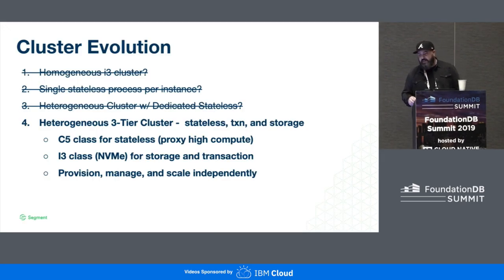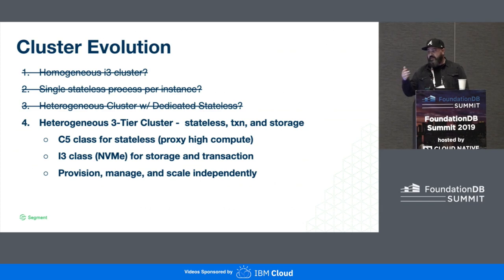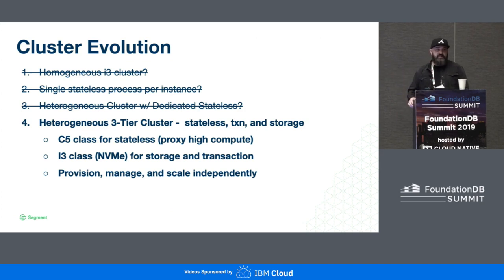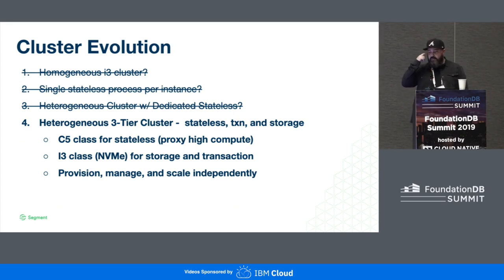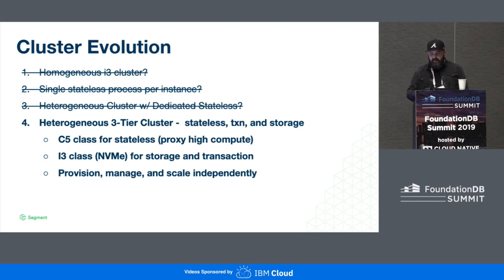We ended up with a heterogeneous three-tier cluster setup. We run a stateless cluster, a transaction cluster, and a storage cluster — all as auto-scaling groups in AWS. That allows us to run C5 instances for the higher compute workloads and I3 instances with NVMe storage for the storage and transaction tiers, and it allows us to scale these clusters independently.